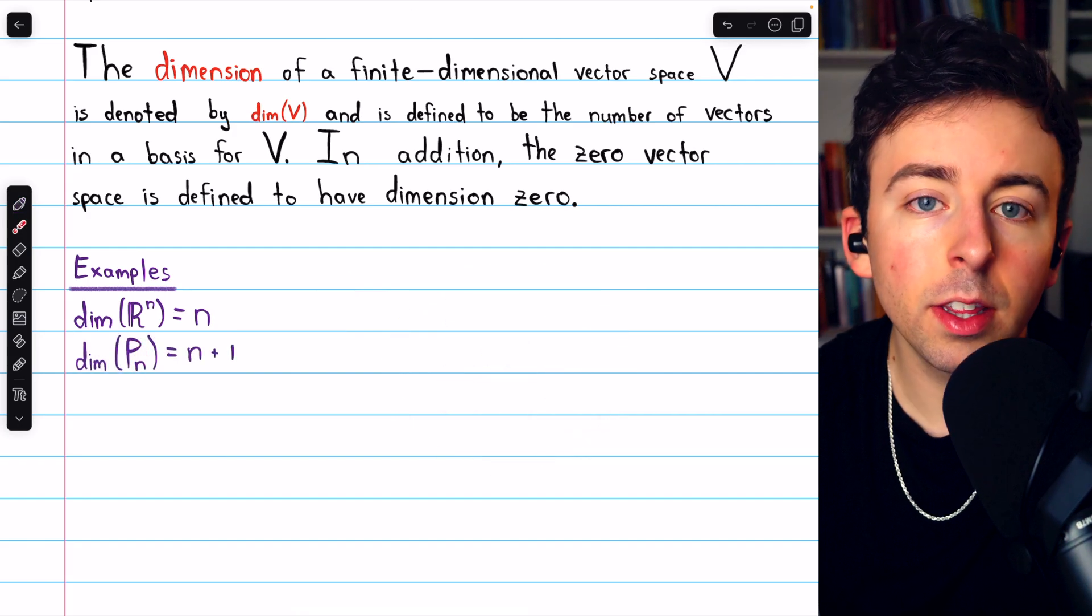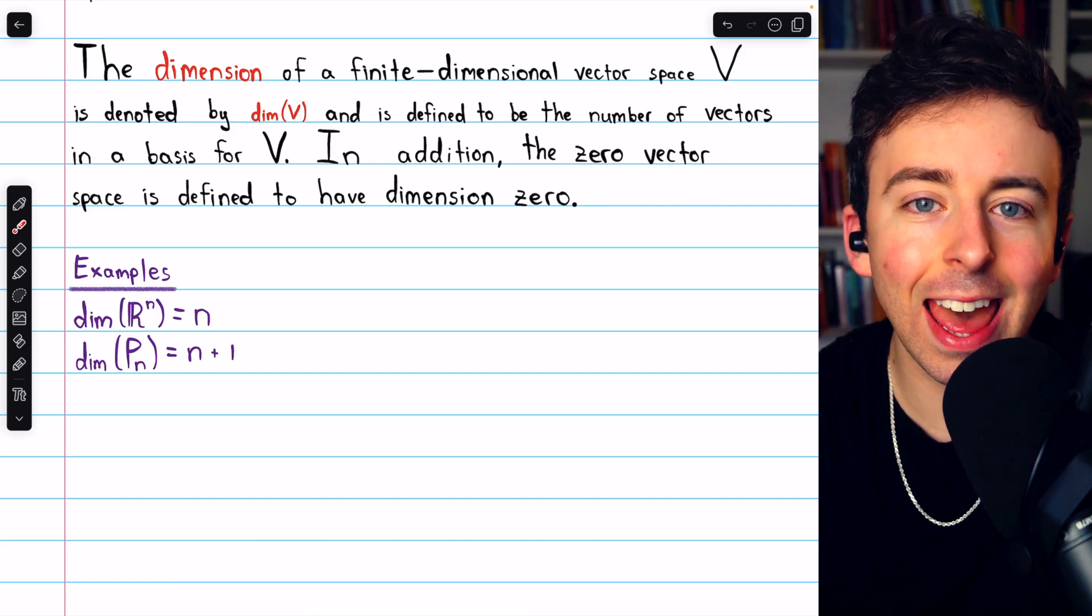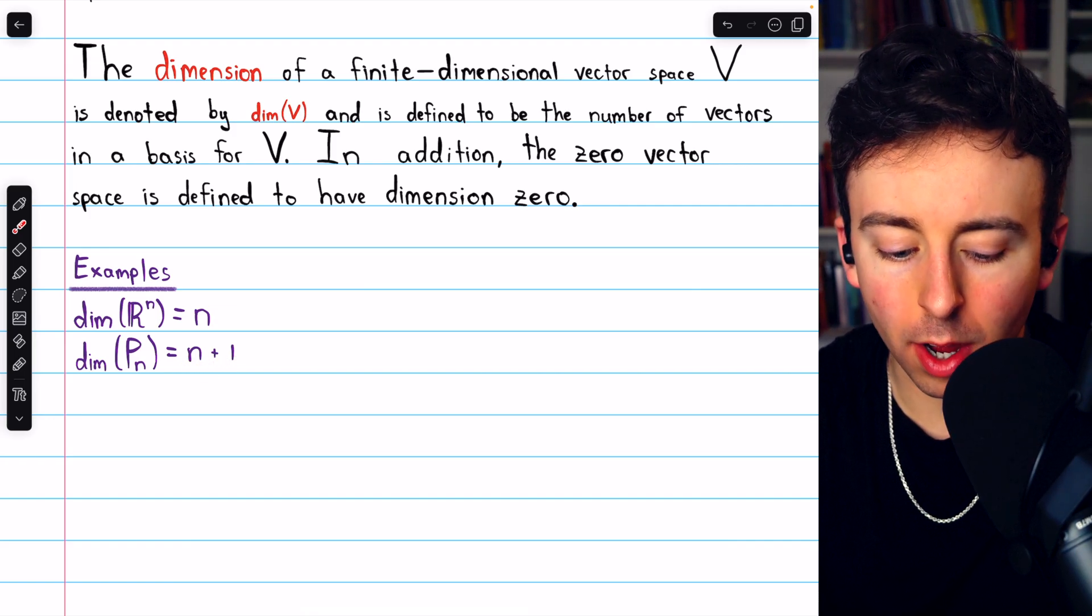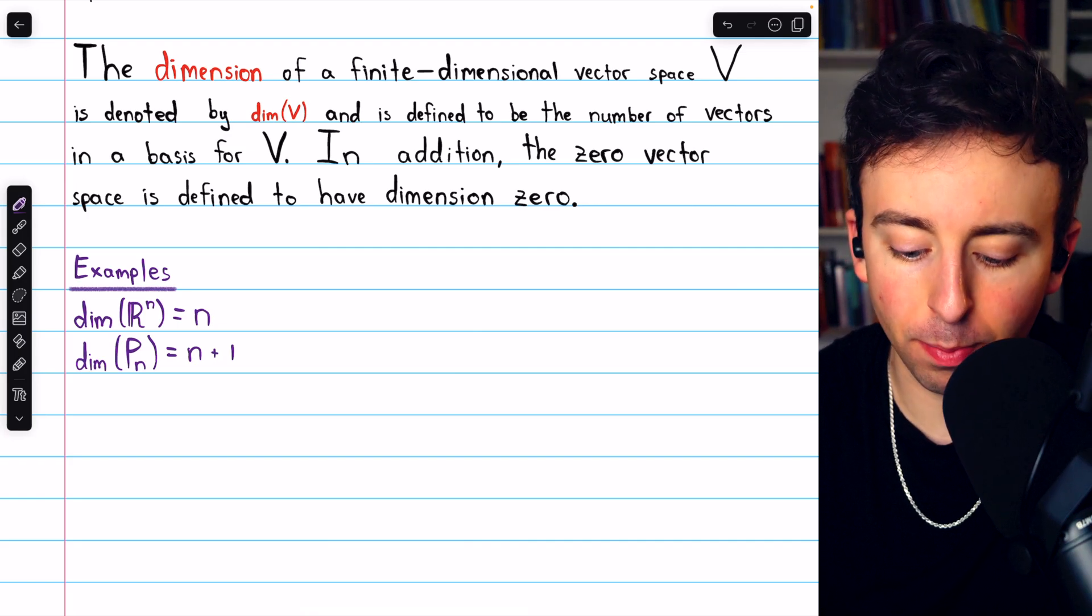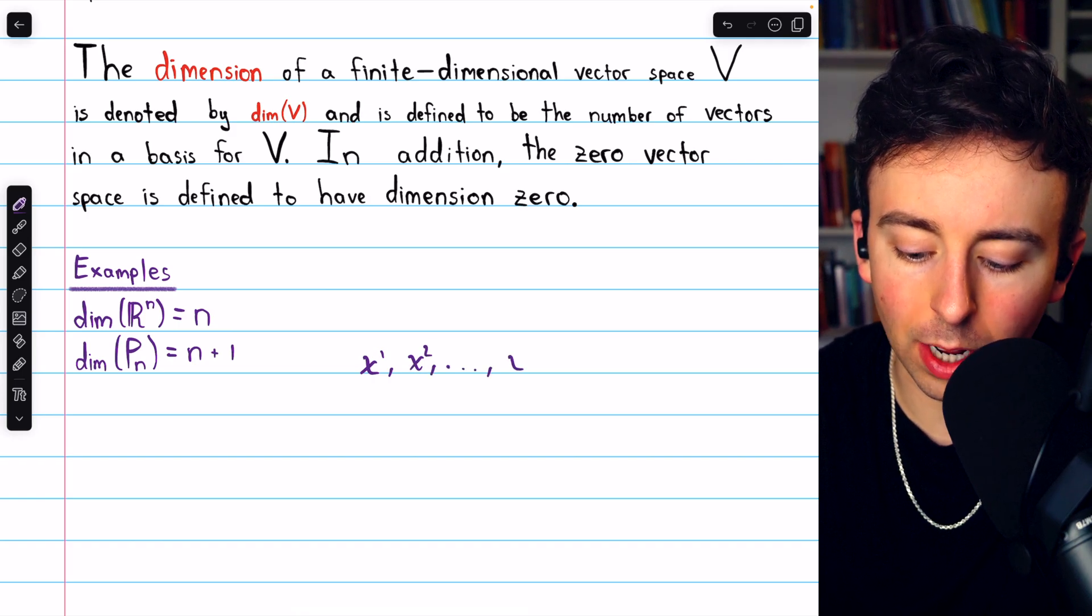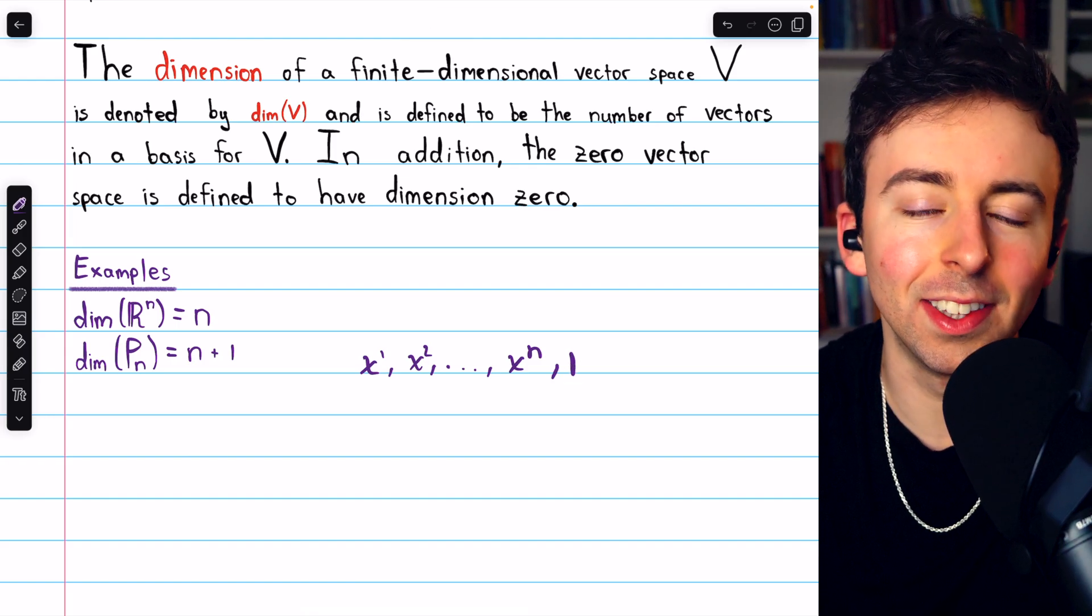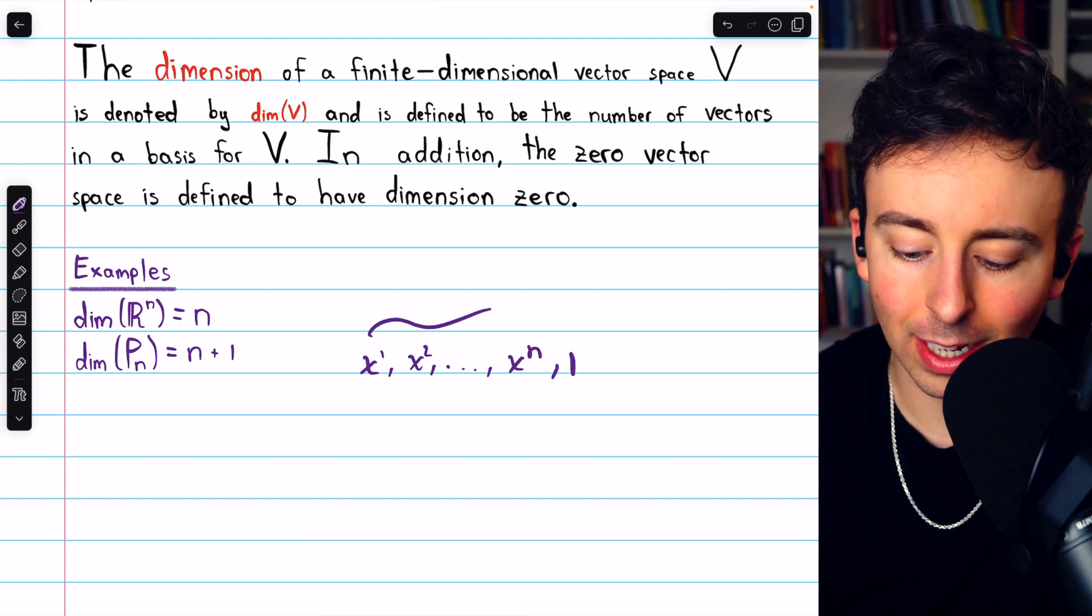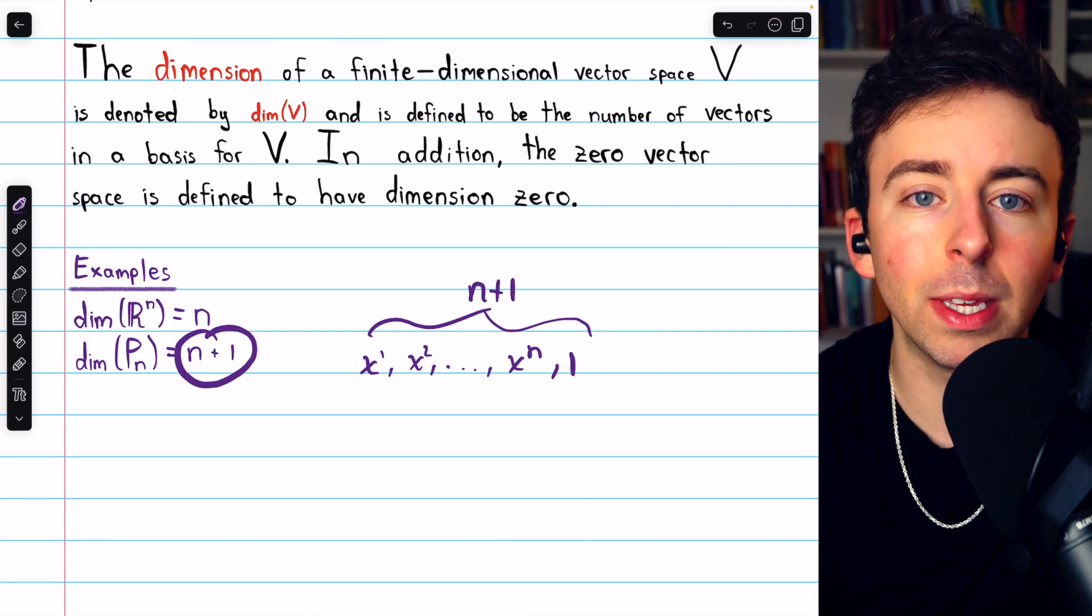The dimension of P_n, the vector space of polynomials with degree at most n, is n+1, because the standard basis of the vector space P_n contains x to the 1, x to the 2, and so on, all the way through x to the n. That's n vectors. And then we also have 1 in the standard basis. So in total, it's n+1 vectors, so that's the dimension of P_n.